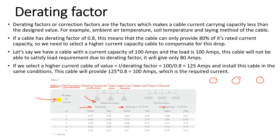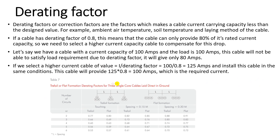The number of circuits refers to how many cable cores are used per phase. For example, if each phase uses two cables, that is two circuits per phase — phase A takes two circuits, phase B two circuits, and phase C two circuits. As shown in the catalog, the more circuits used, the lower the derating factor becomes.